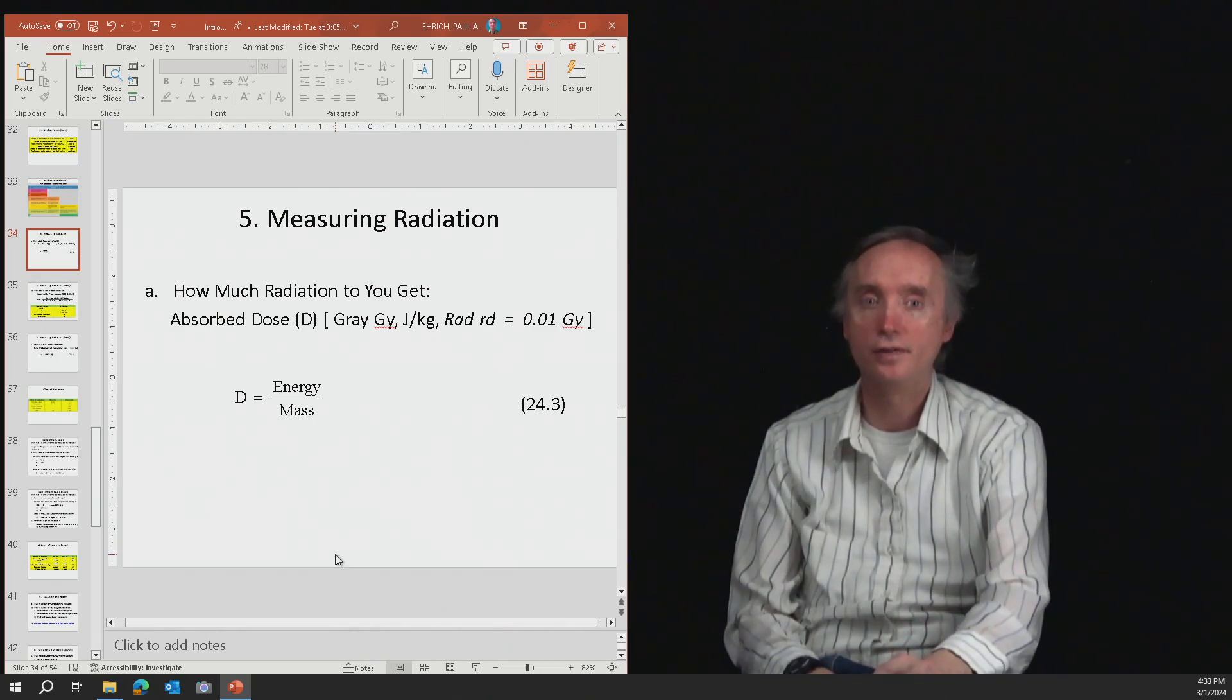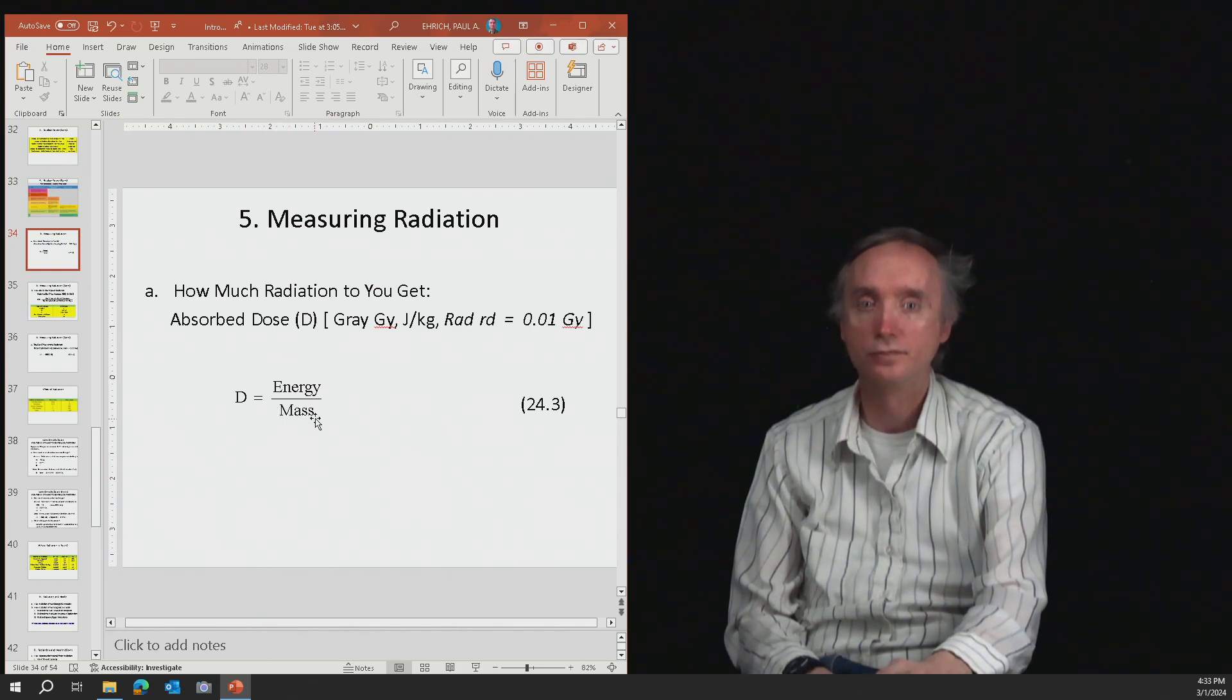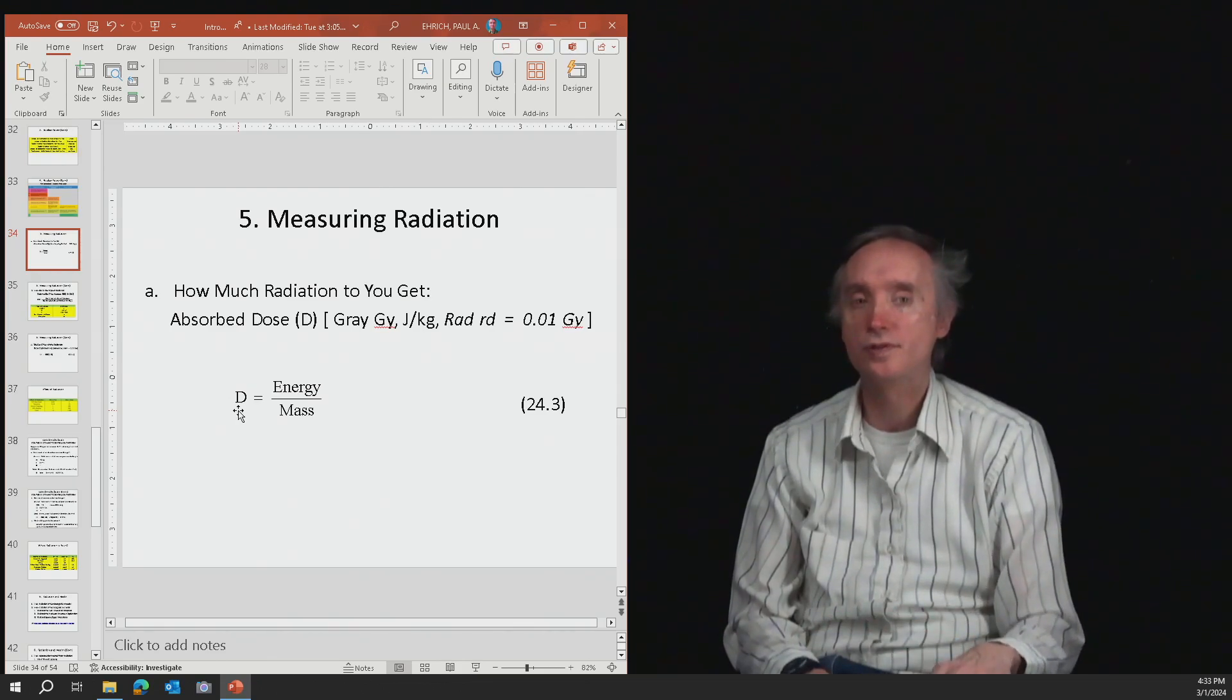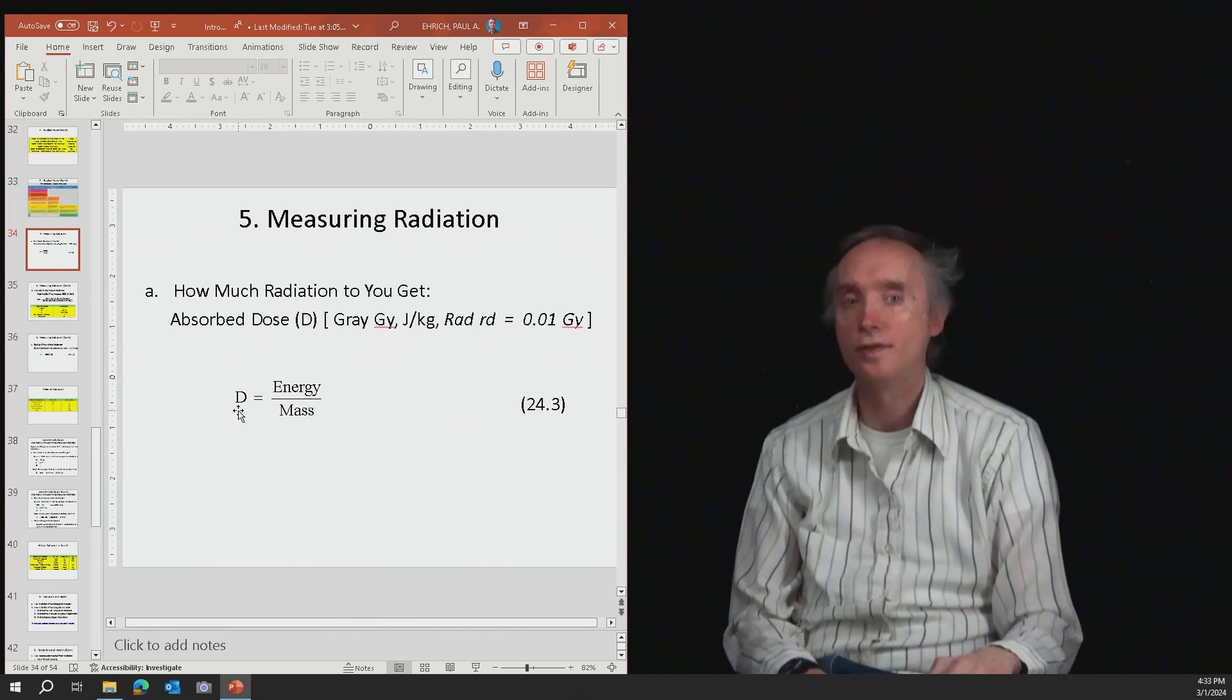So if you divide by a big number, so for the adult, the adult has the larger mass. If you divide by a big number, what comes out is a small number. So the adult will receive a smaller dosage of radiation than what the baby will.